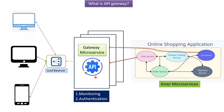API Gateway is a single entry point for all clients, so if the Gateway microservice goes down, the entire system will be down. To avoid that, we should deploy multiple Gateway microservices and split the requests using a load balancer. All clients send requests to the load balancer, and the load balancer routes requests to different Gateway microservice instances based on availability. This way we can avoid a single point of failure.